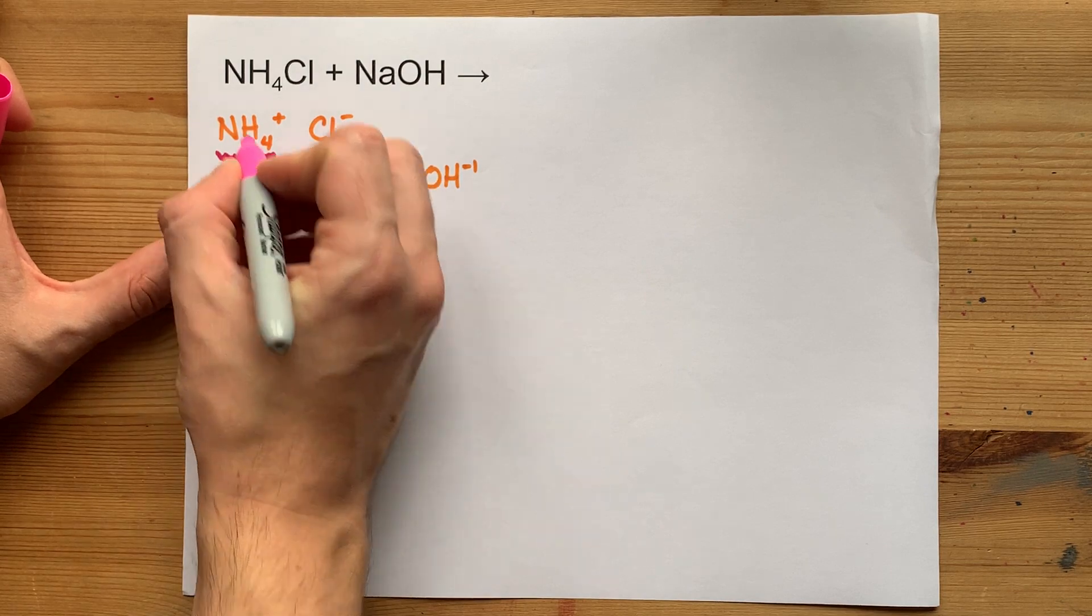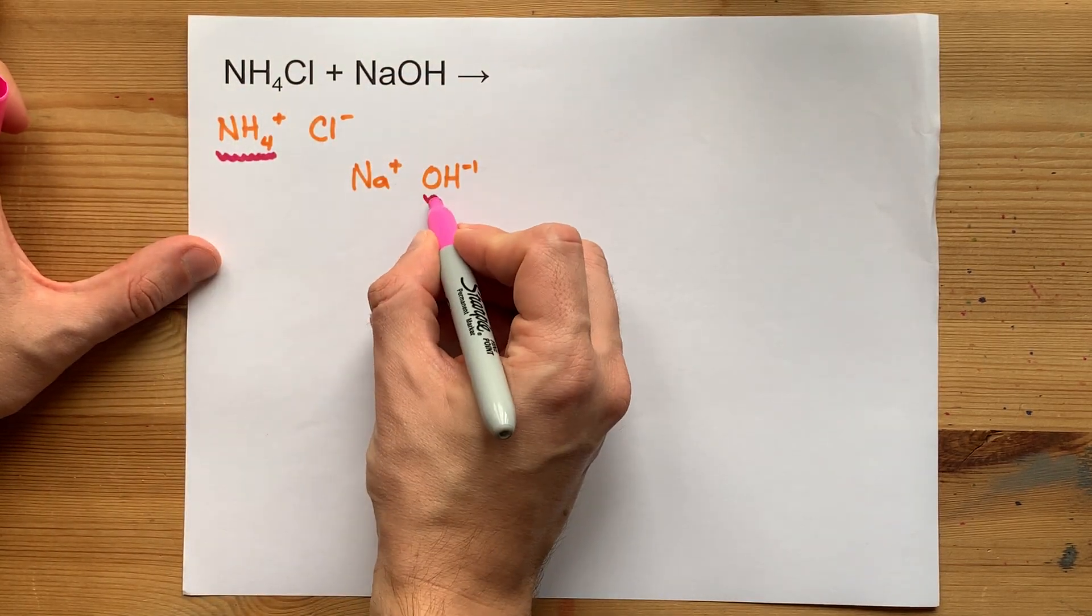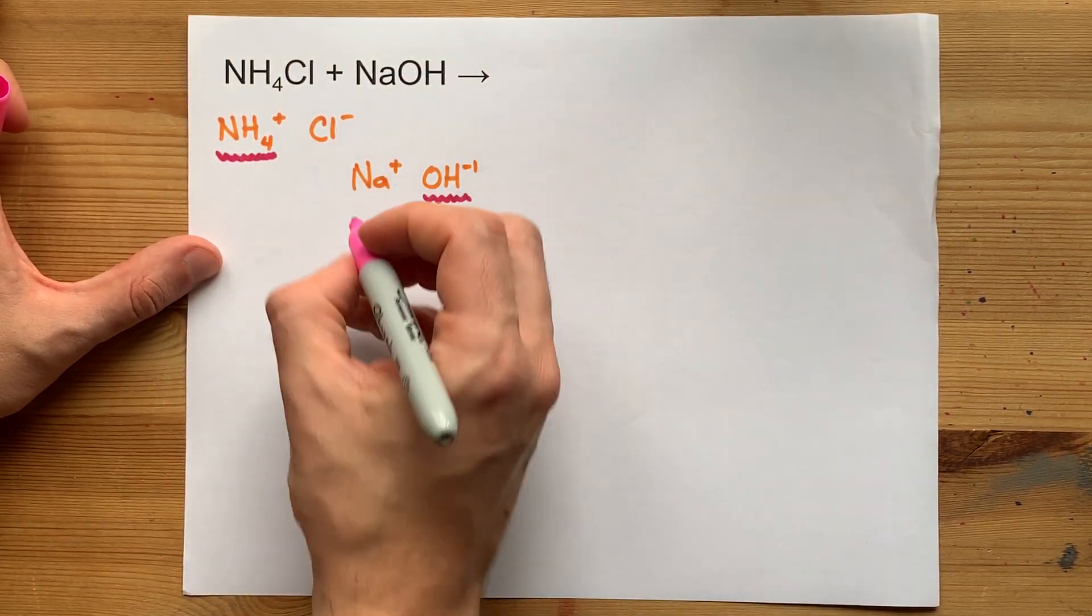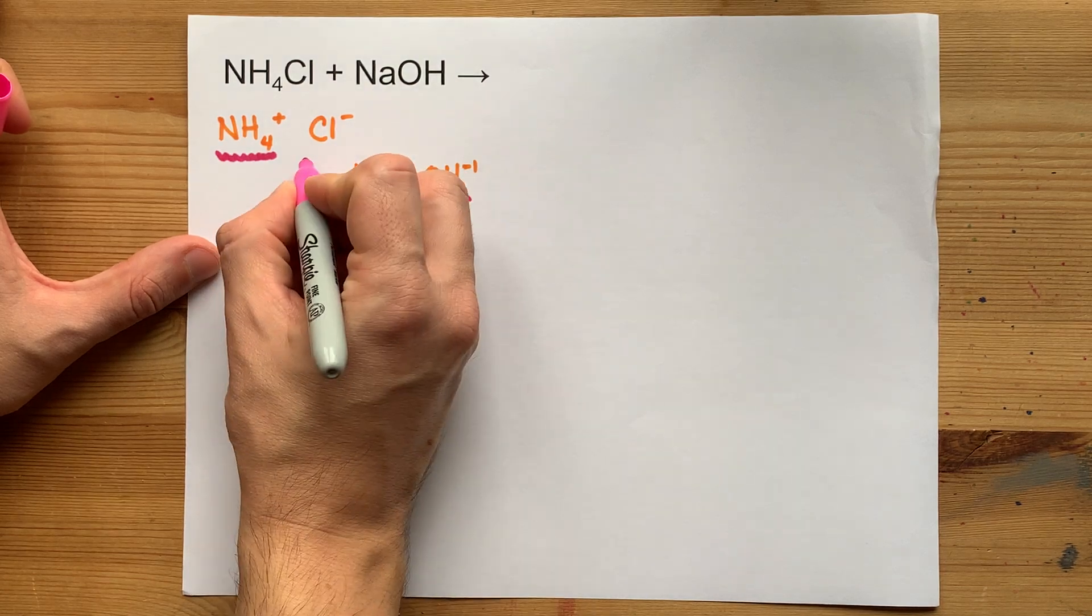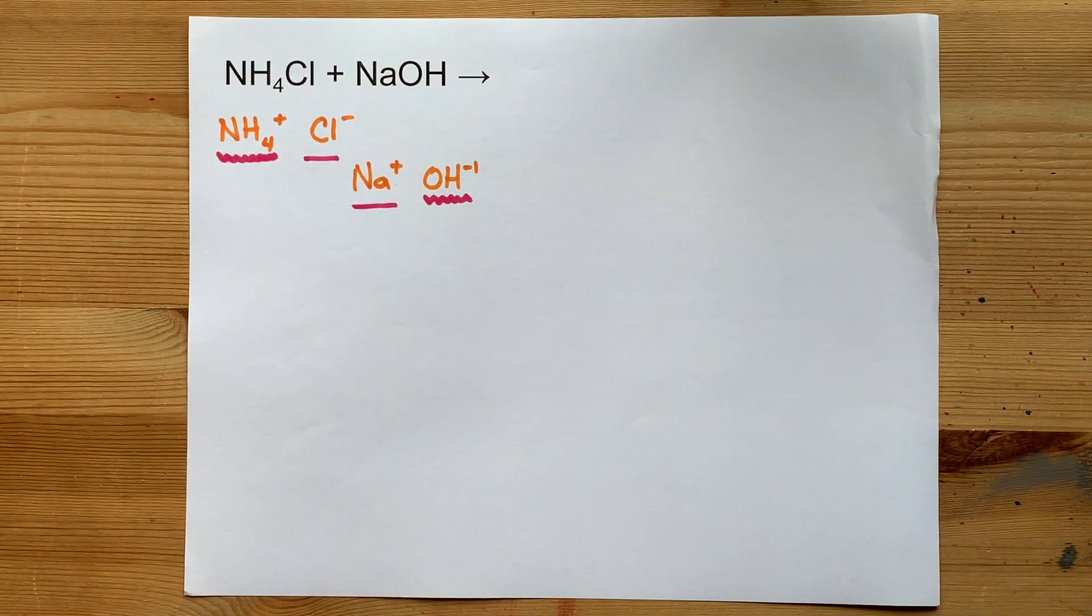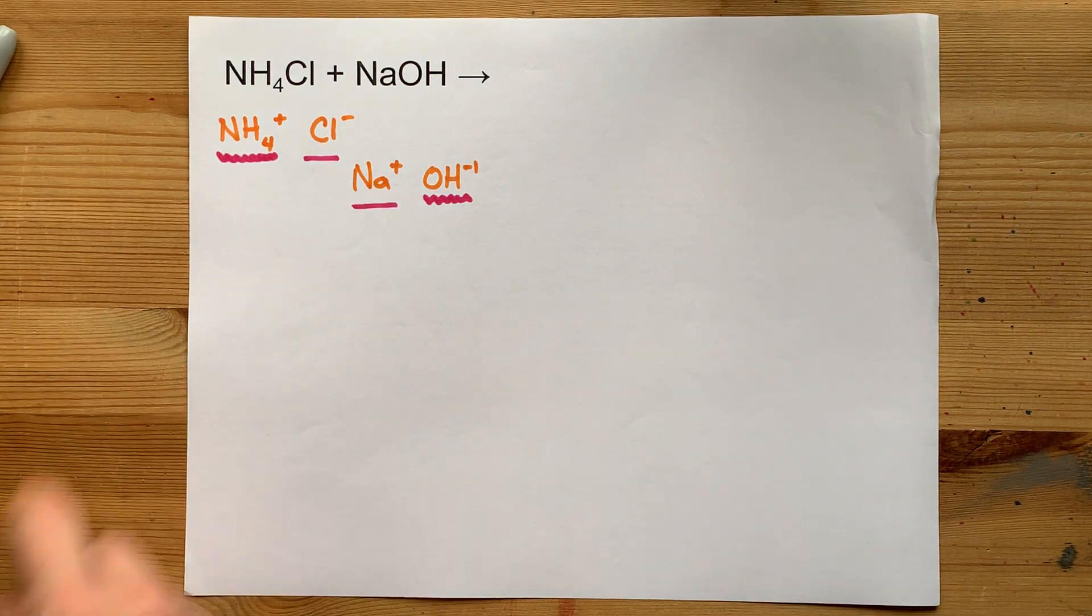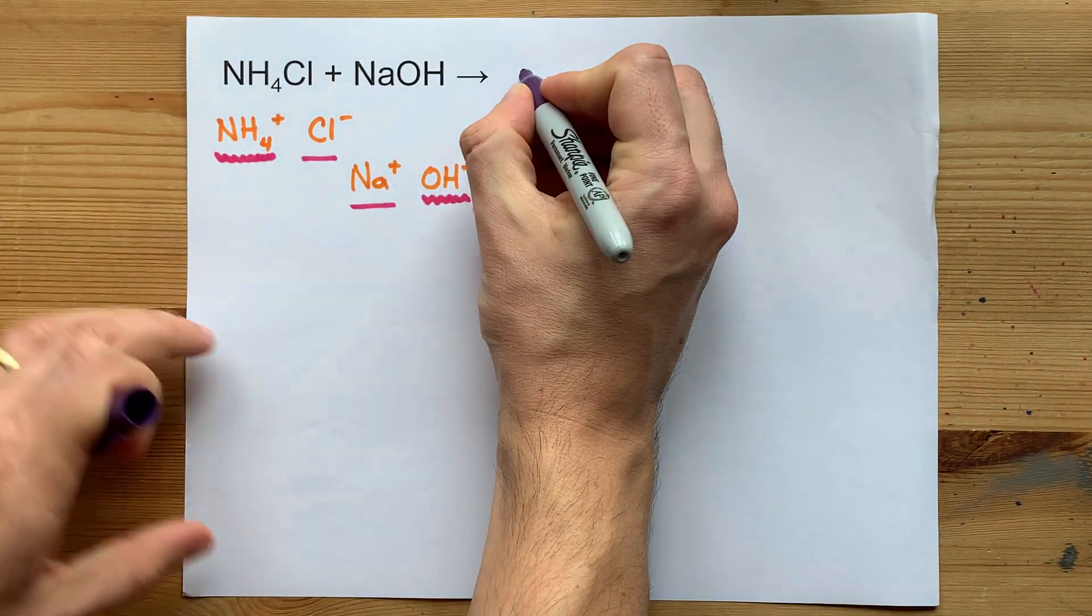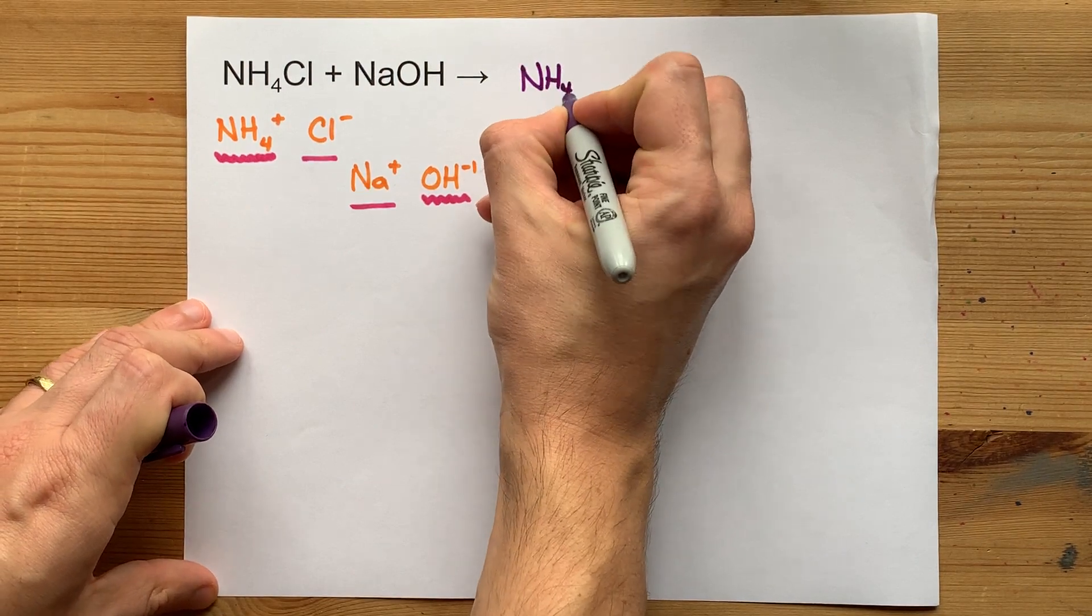Put one of the positive ions with the other's negative ions, and then put the other two ions together that were not paired up and pair them up. When I pair up NH4 with OH, I end up with NH4OH.